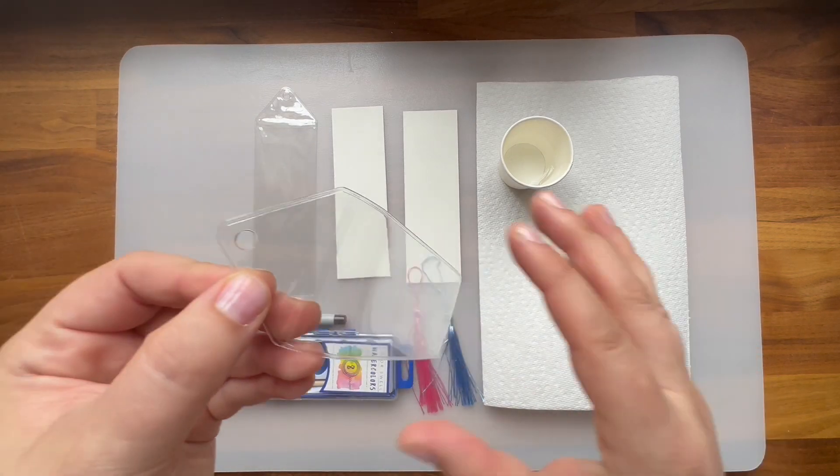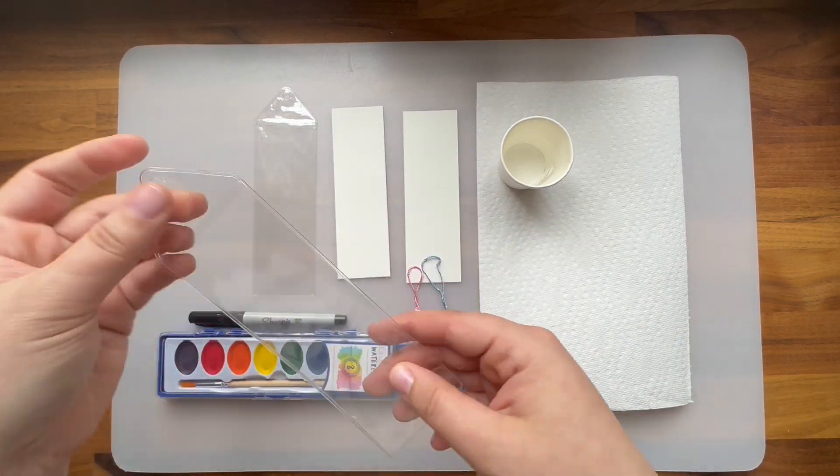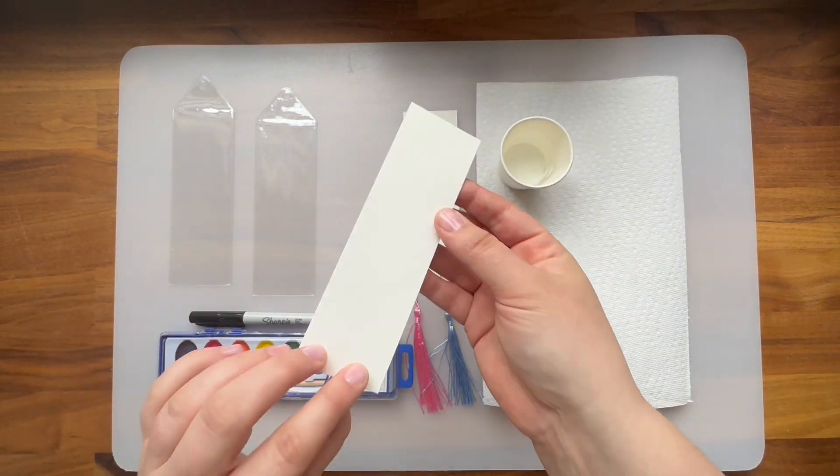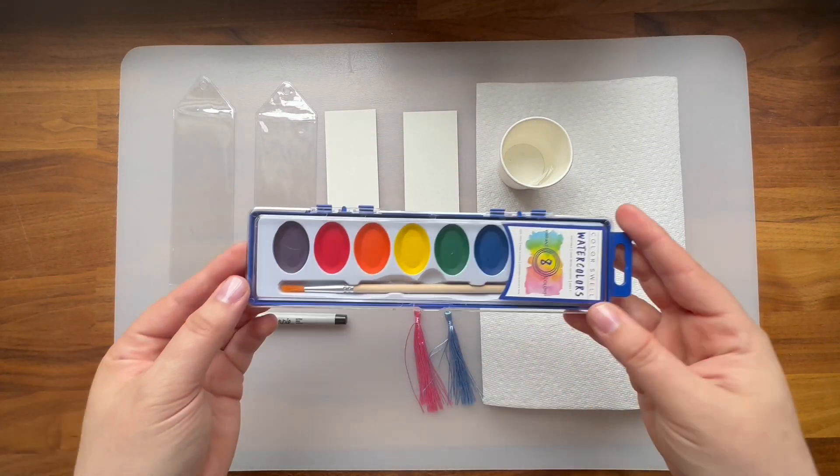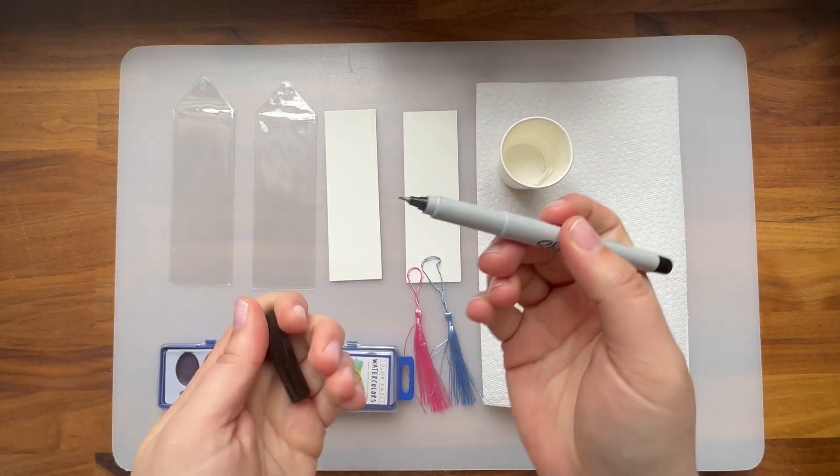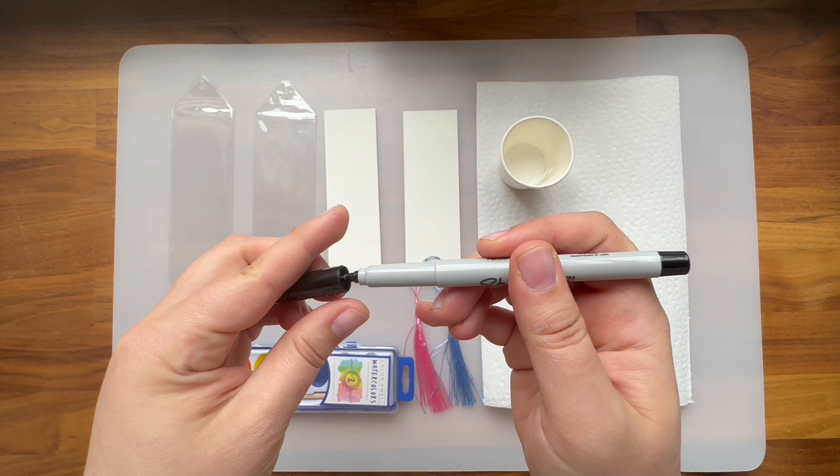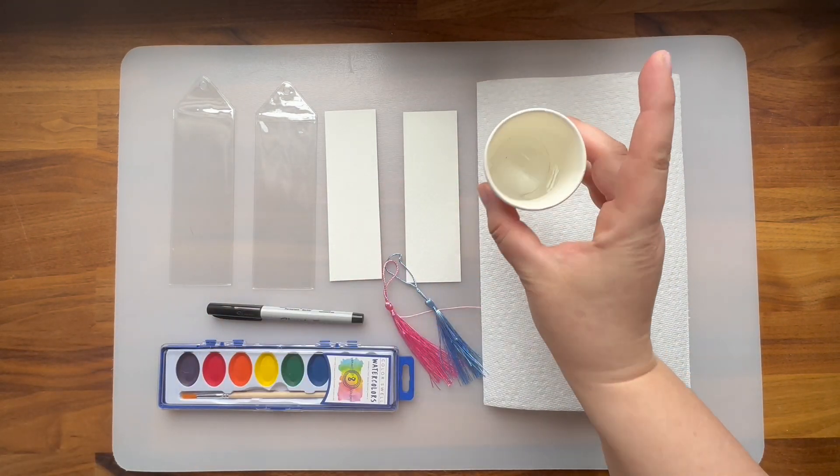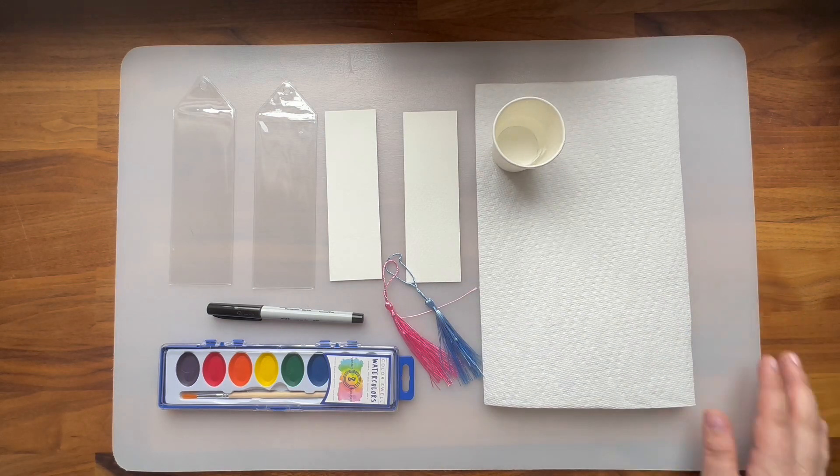In this video we will be using two plastic bookmark covers, two pieces of watercolor paper cut to size, one simple watercolor palette with a brush, one ultra fine tip Sharpie marker, a couple of tassels, a small cup of water, and paper towels.